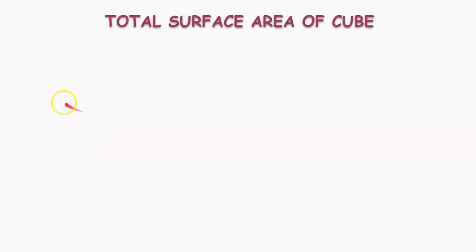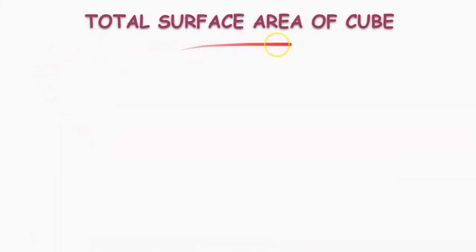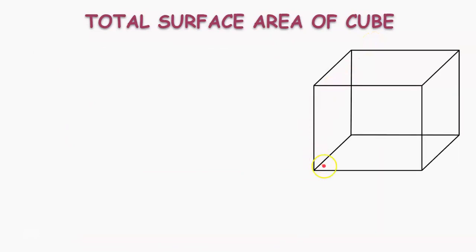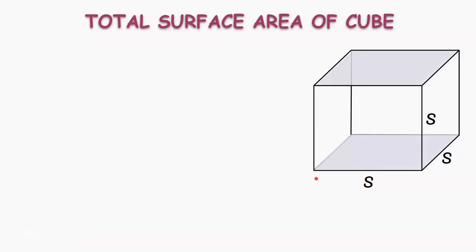Hello children, now let us find the total surface area of a cube. For that, let us take a cube whose dimensions are equal and equal to S each. Now, let us consider the top face and bottom face, whose each side is S.